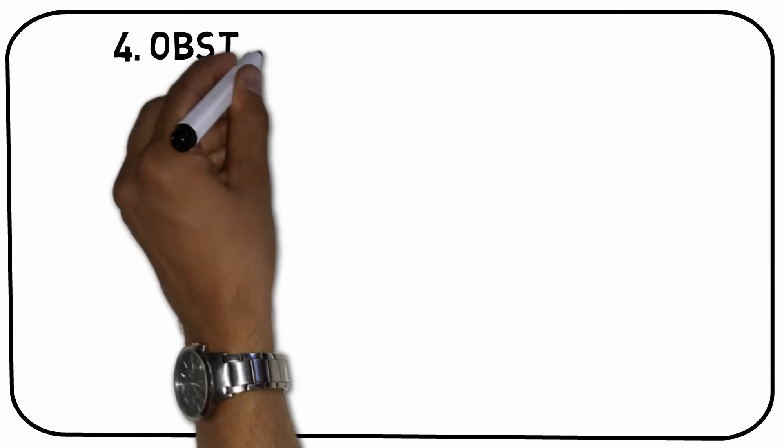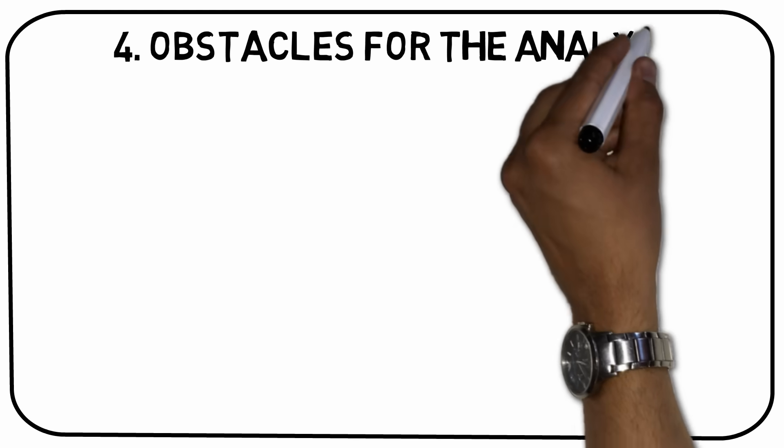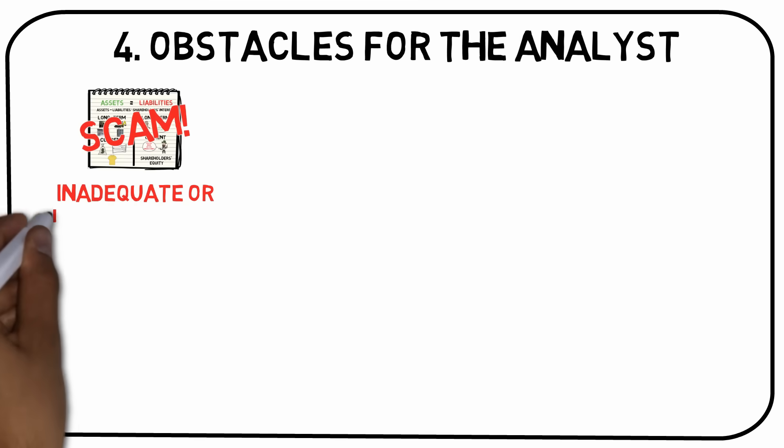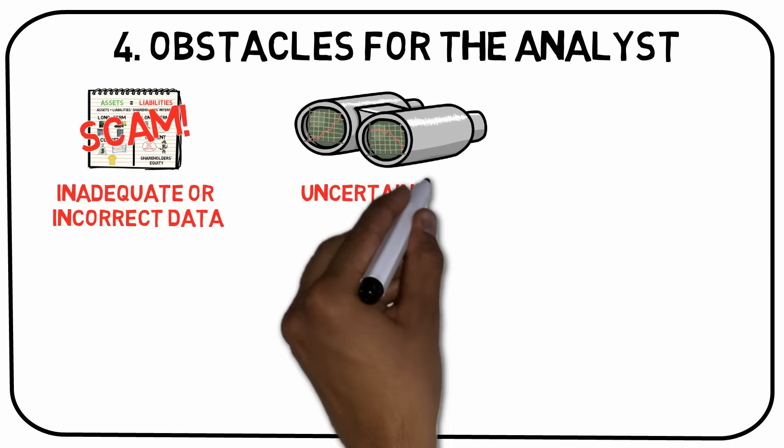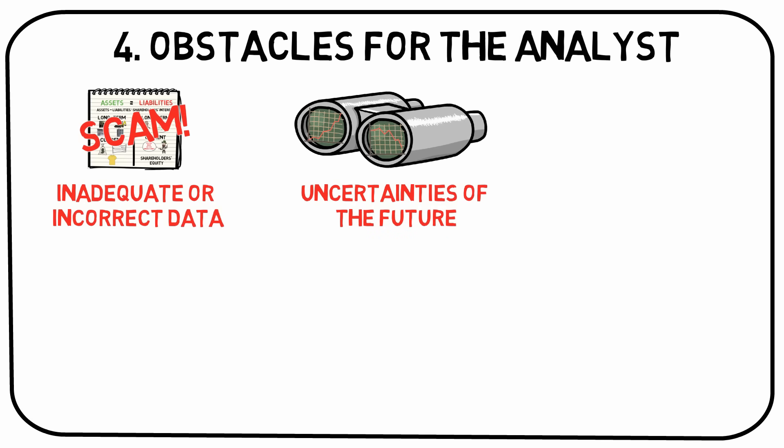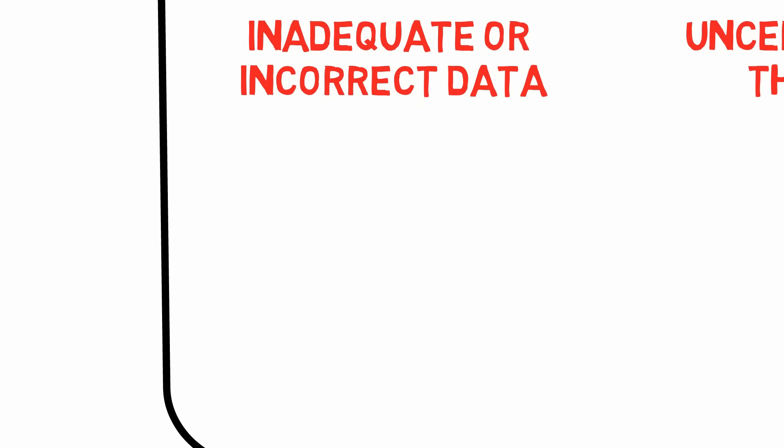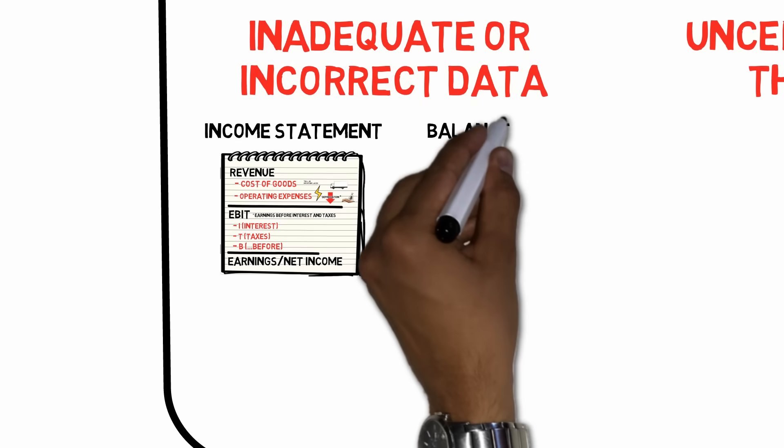Takeaway number four: obstacles for the analyst. There are three primary obstacles that makes successful security analysis more difficult than it might seem at a first glance. These are inadequate or incorrect data, uncertainties of the future, and irrational behavior of the markets. We will discuss the first point in much greater detail in the second video, when we dive into the two major financial statements of a company, the income statement and the balance sheet.